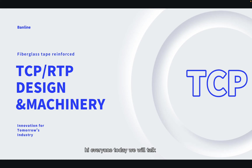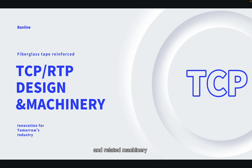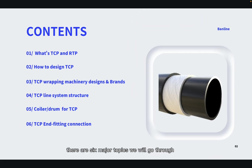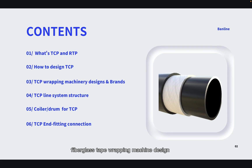Today we will talk about the fiberglass tape reinforced thermoplastic composite pipe — the bonding structure of reinforced thermoplastic pipe design and related machinery working process. In this session, there are six major topics. First, I will introduce the main differences between TCP and RTP, then we will cover how we design the TCP, and jump to the main fiberglass tape wrapping machine design brands in the market.